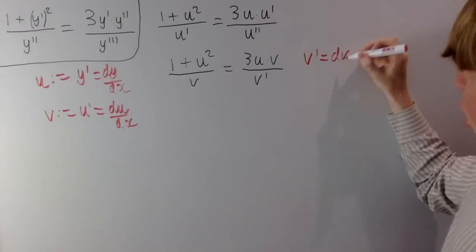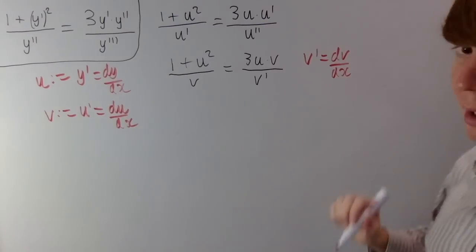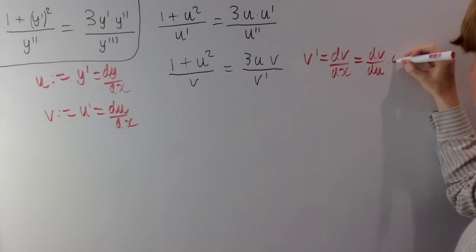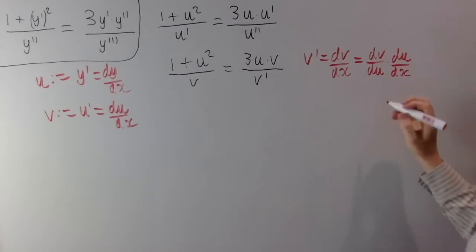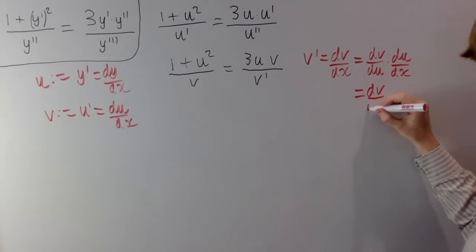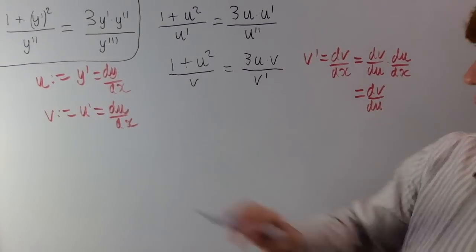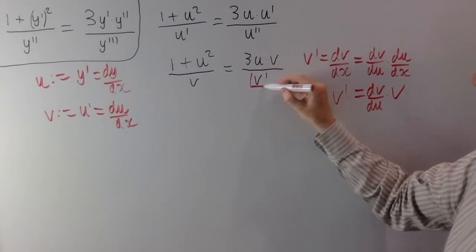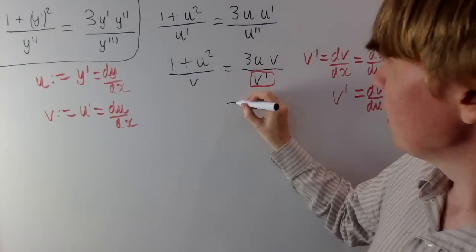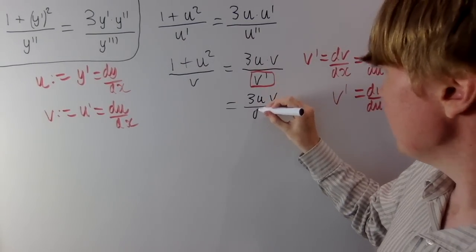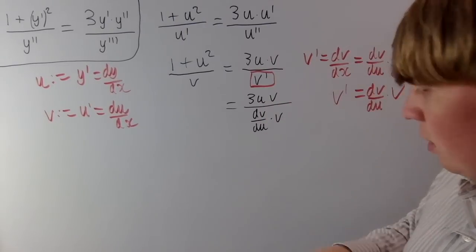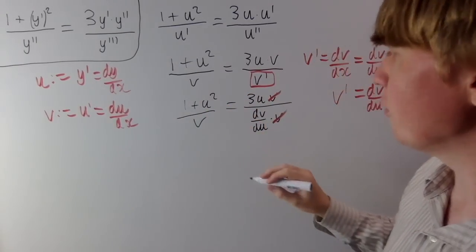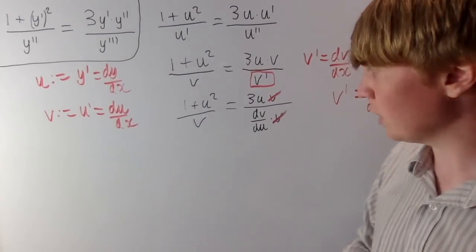There's a common trick here: v dash is dv by dx, but using the chain rule we write dv by dx as dv by du times du by dx. Now du by dx is just v, so v dash equals dv by du times v. Replacing v dash in the equation gives 3uv over dv by du times v — the two v's cancel — and the left hand side stays as 1 plus u squared all over v. Now this is a separable differential equation just in terms of u and v, which we can solve.